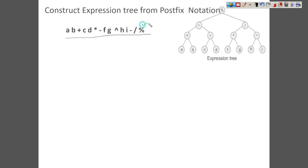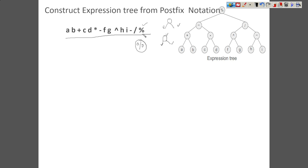We start with the first symbol, which is an operator itself. In the case of prefix, whenever we come across an operator we look for the left operand and then the right operand. But in the case of postfix, whenever we get an operator we first look for the right operand and then the left operand. So we are doing the same thing but in reverse. We come across the operator, and we start by looking for the right operand.